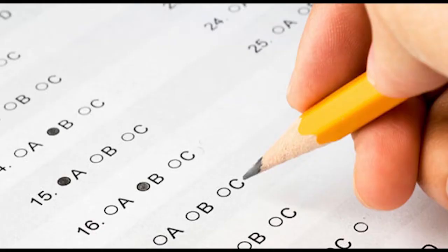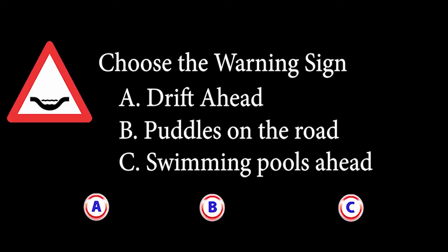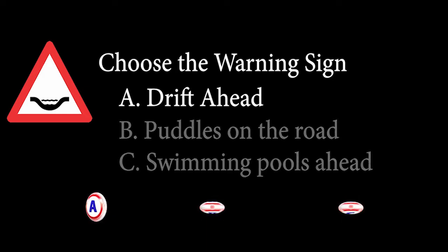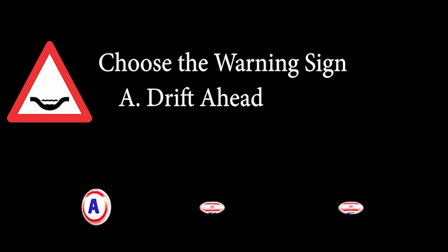Typical examination question: Choose the warning sign displayed. A: A drift ahead. B: Beware of puddles on the road. C: Swimming pools ahead. The answer is A.